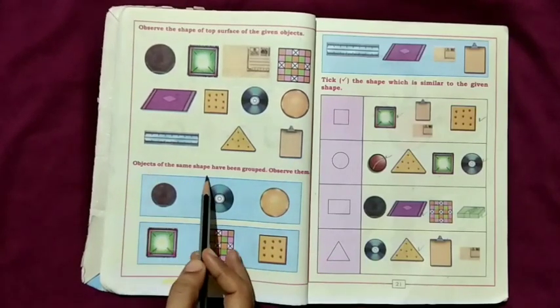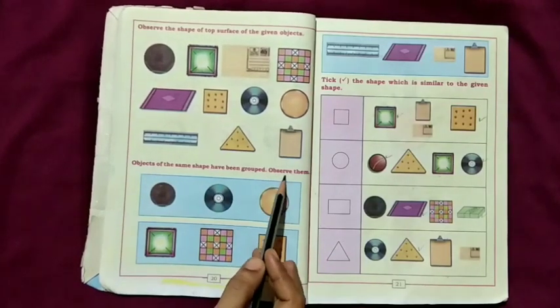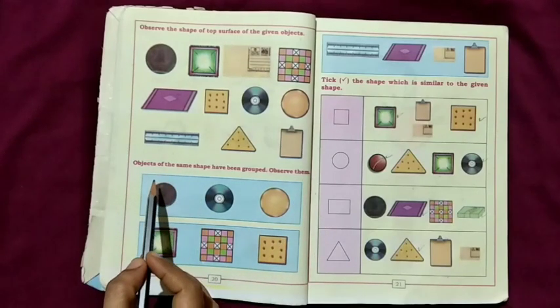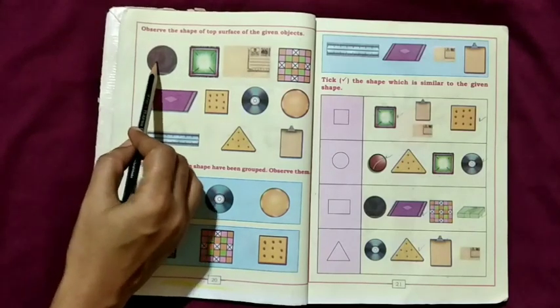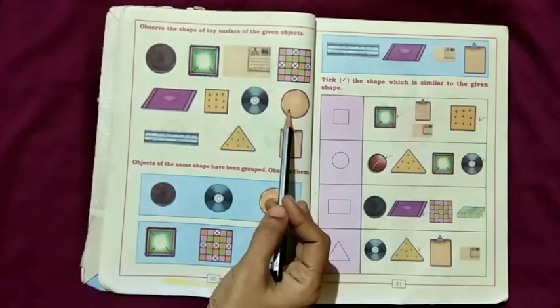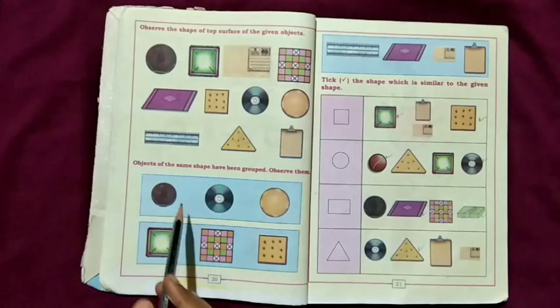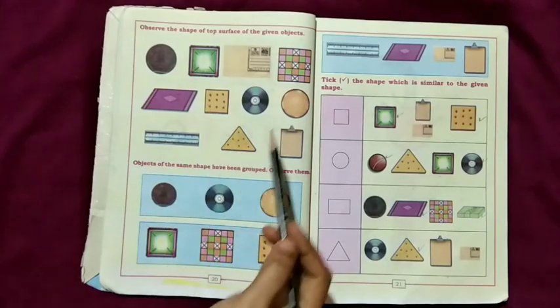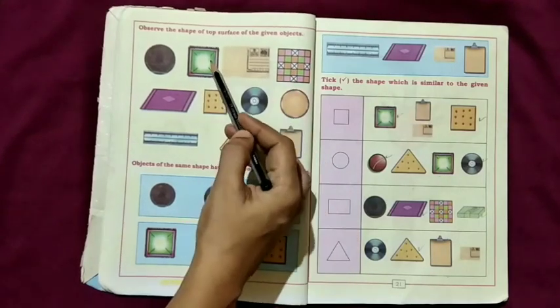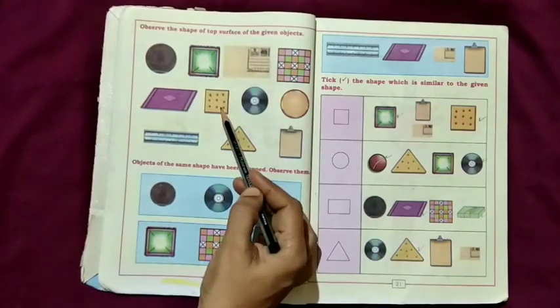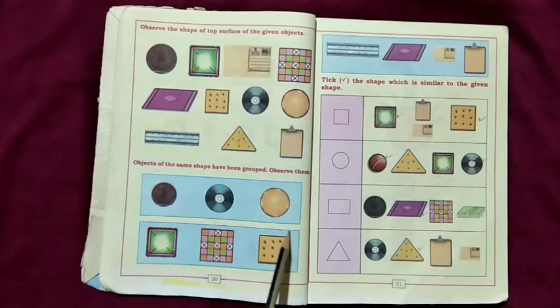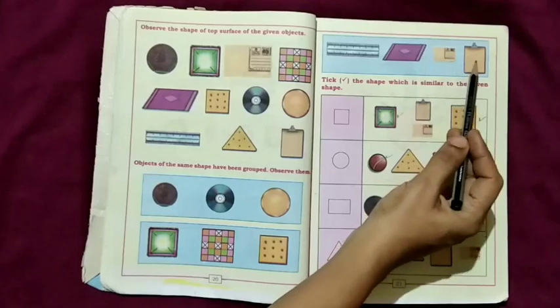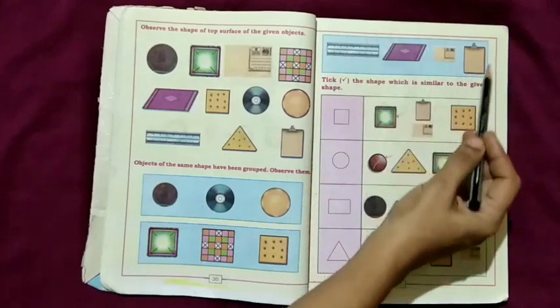Objects of the same shape have been grouped. Observe them. You have to group the objects having same shape. This one rupee coin and disc have the shape of circle. Then this Ludo and this object and this biscuit have the shape of square. Ruler, mat, postcard, writing pad have the shape of rectangle.